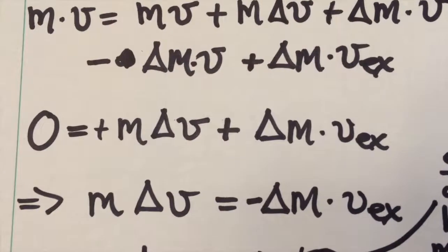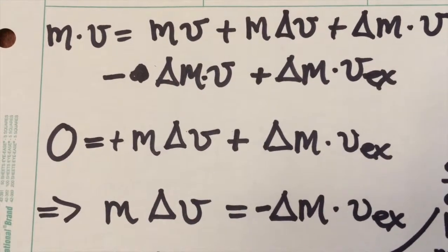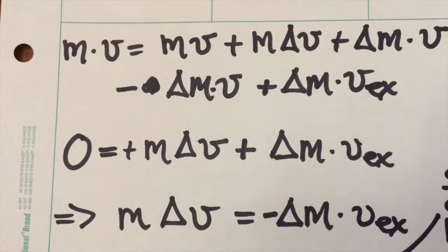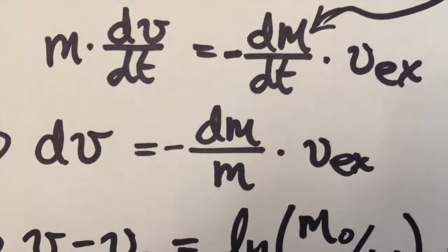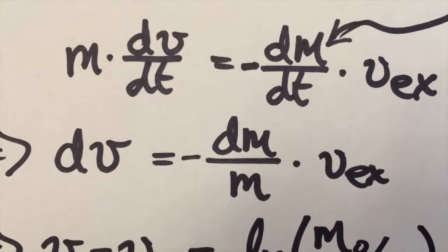In other words, the mass of the rocket times its change in its velocity has to be equal to negative the change in its mass times the exhaust velocity. Remember that delta m is going to turn out to be a negative number. We can rework things, and instead of taking deltas, we can take the limit as delta t goes to zero.